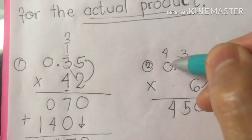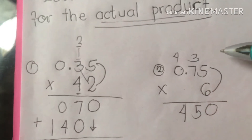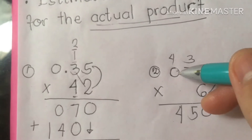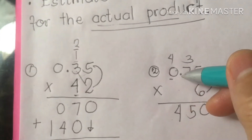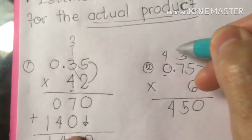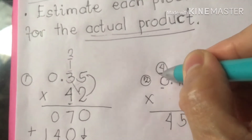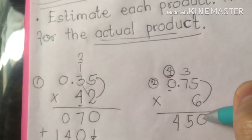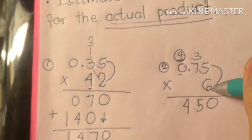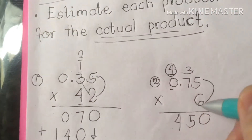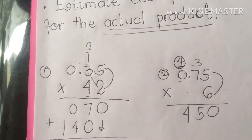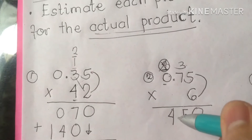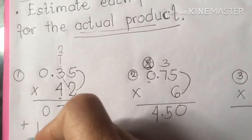Since this is the last number being multiplied, we are not going to regroup 4. Instead, we write 4 here and write the whole result. 5 times 6 is 30, bring down 0, regroup 3. 7 times 6 is 42, plus 3 is 45. So therefore, counting decimal places — 1, 2 — it's 4.50, our actual product.